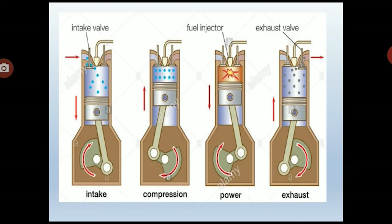The next stroke is the power stroke. The compression raises the pressure and temperature of the air to match the self-ignition temperature of the diesel. The fuel molecules absorb heat from the surrounding hot air and vaporize, causing combustion to take place. This releases heat energy and pushes the piston from TDC to BDC, with both valves remaining closed. This downward motion provides positive driving energy to rotate the crankshaft. Only the power stroke develops energy; the rest of the cycle draws energy from the flywheel. The flywheel is a circular disk attached to the crankshaft that stores energy during the power stroke and releases it during the remaining strokes.